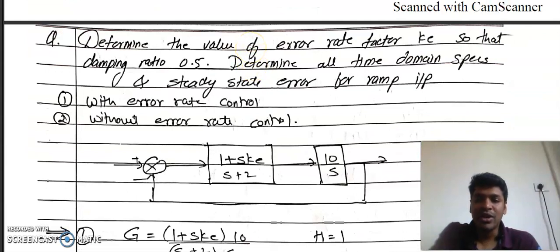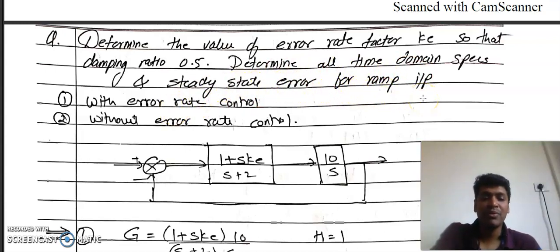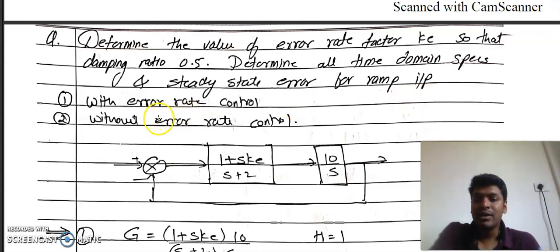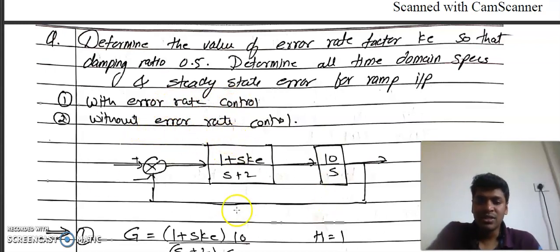Now let us have a combined problem. Determine the value of error rate factor ke so that the damping ratio is 0.5. Also determine all the time domain specifications and steady state error for the ramp input. There are two conditions: Part 1 with error rate control, and Part 2 without error rate control. With error rate control, this is the system.